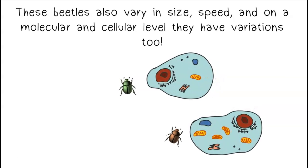For example, some beetles may have cells that have more mitochondria. This cellular variation may give beetles an advantage.